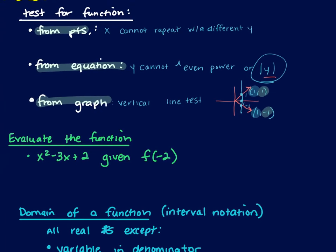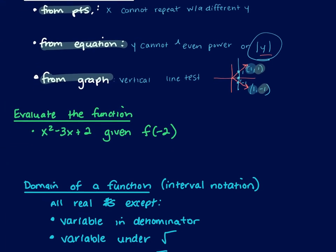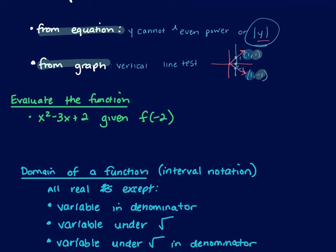Then we got into evaluating the function. You're given an f(x) and then asked to find f of a value or expression. So if f(x) equals x squared minus 3x plus 2, and I want f(-2): everywhere there's an x, plug in negative 2. I get 4 plus 6 plus 2, which is 12.